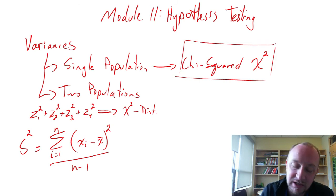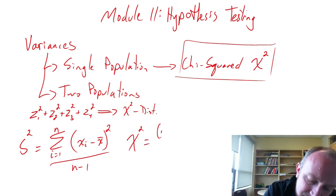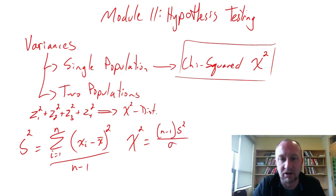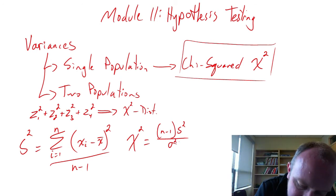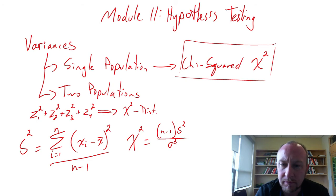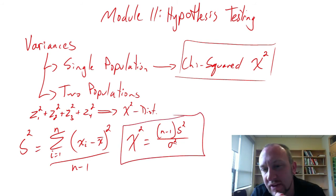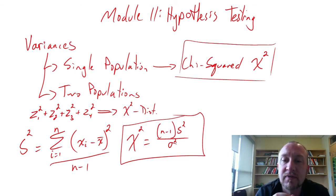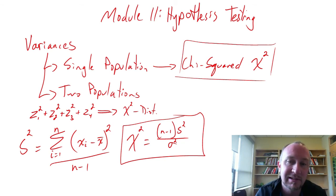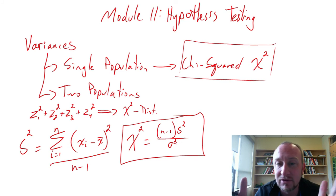Our test statistic, denoted chi-squared, will be n minus 1 times the sample variance, divided by the unknown population variance. This identity is what we'll use for all single population tests and interval estimates. We'll go through two-tail tests, one-tail upper and lower tail tests, different interval estimates, and how to use this new distribution.